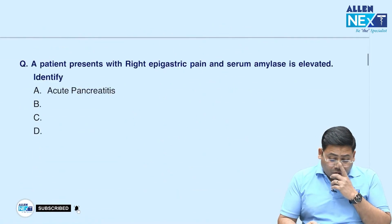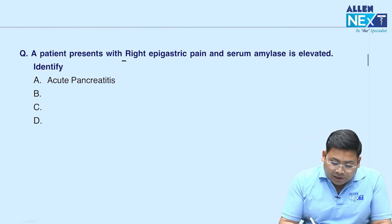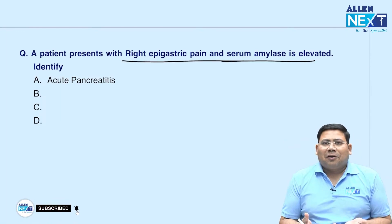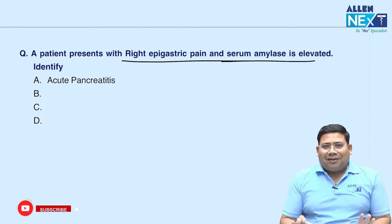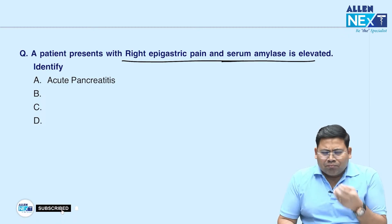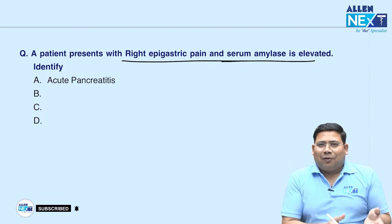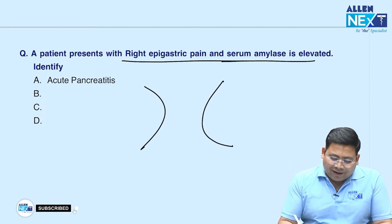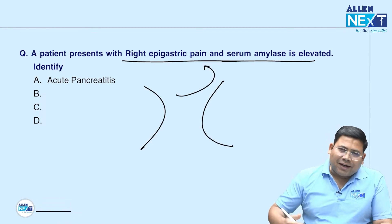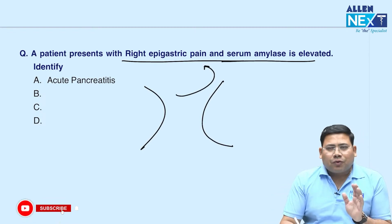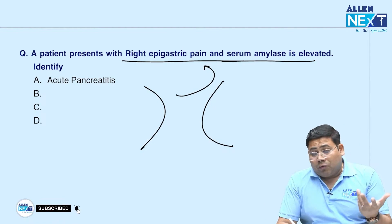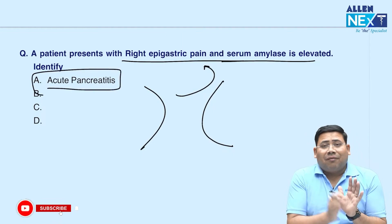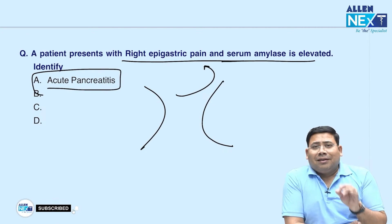Then a patient with right epigastric pain with elevated amylase — if the pain is radiating towards the back and lipase is given in the options, acute pancreatitis would have been the answer.